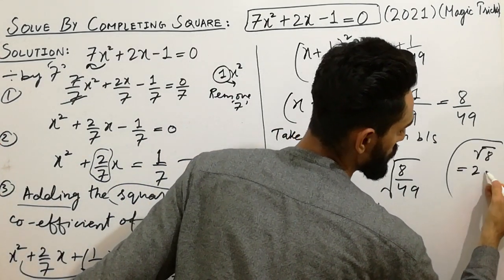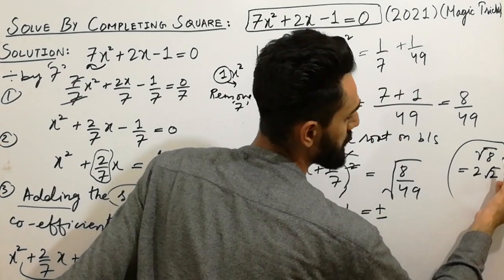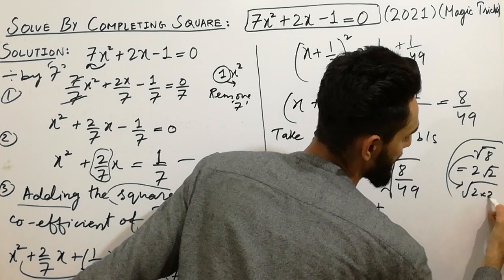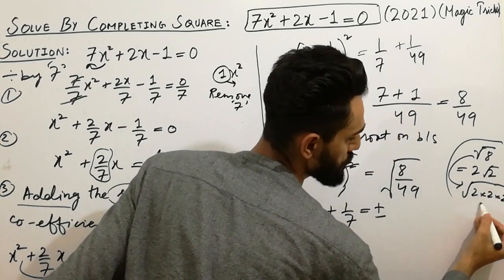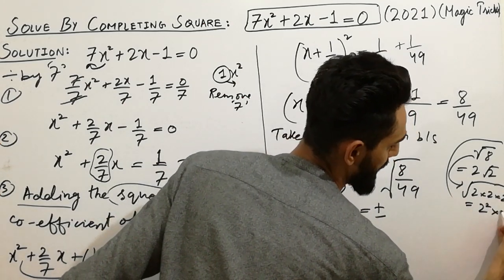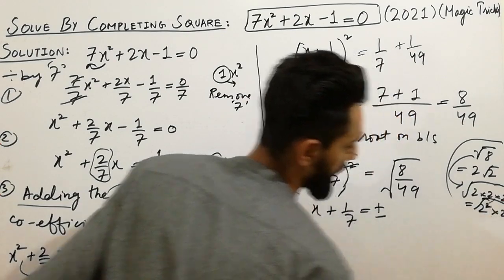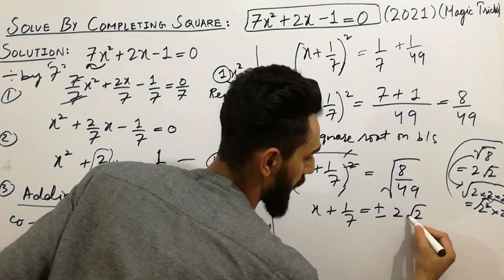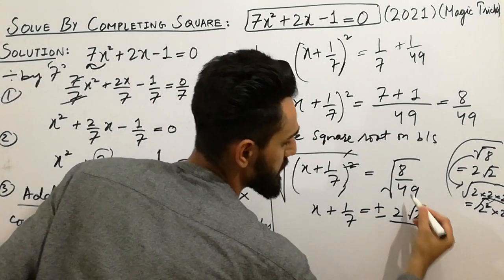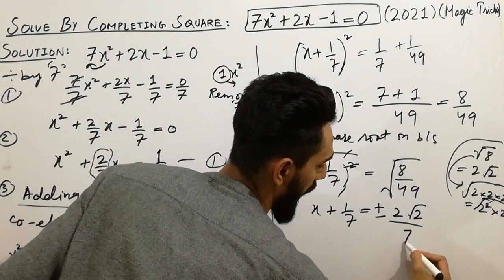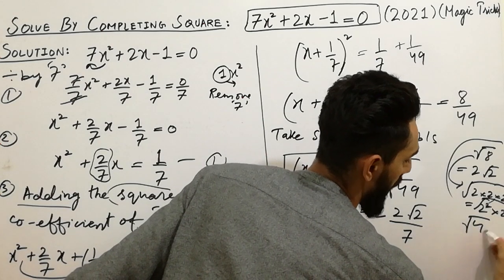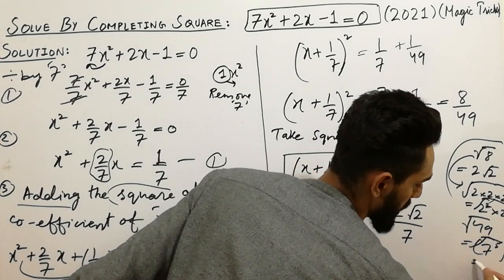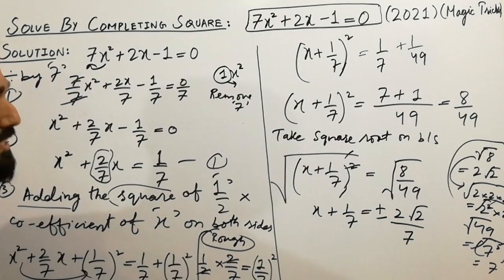For the square root of 8, we can write 8 as 2 multiplied by 2 multiplied by 2, which is 2 squared multiplied by 2. So the square root of 8 gives 2 times square root of 2. For 49, since 49 equals 7 squared, the square root of 49 is 7. So we get plus or minus 2 square root of 2 over 7.